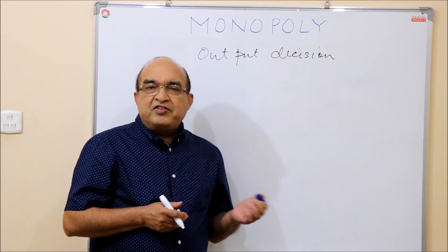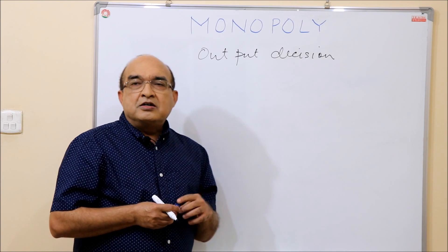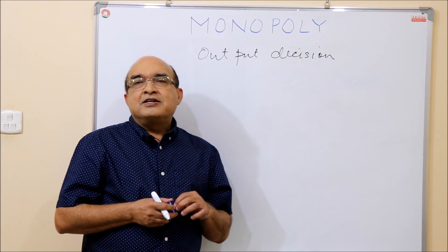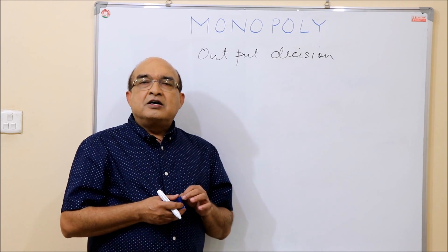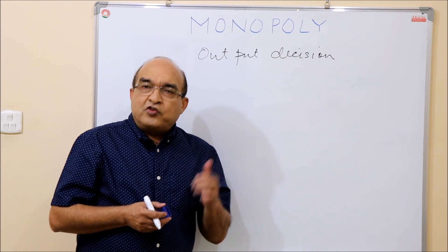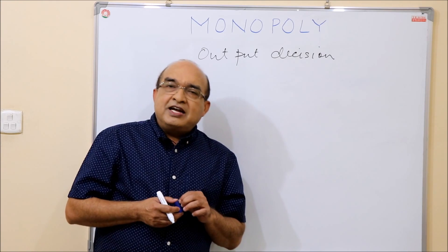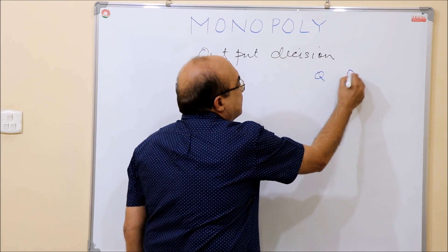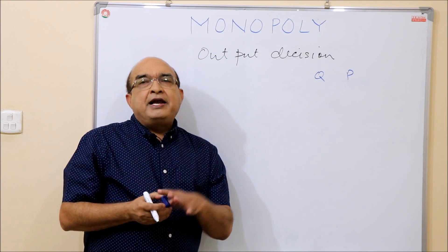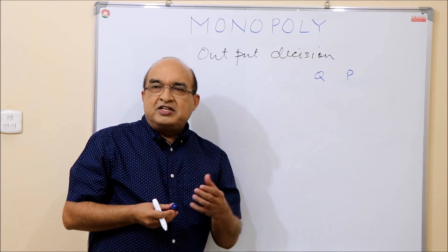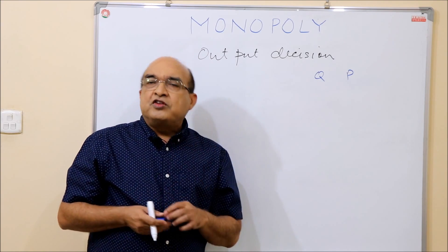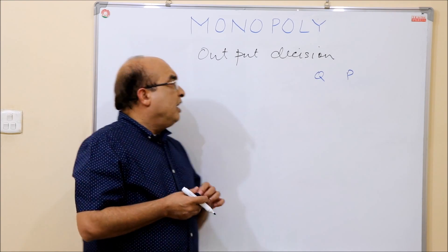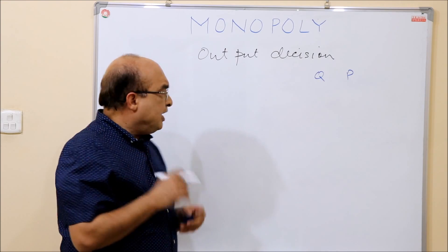In one of my previous videos in the series of lectures on monopoly, I explained the kind of market that monopoly is and the kind of demand curve the monopoly firm faces. From that it became obvious that a firm can choose one element of the two — either quantity or price. It can choose the quantity and the price will be determined by the demand curve, or if it chooses the price, it determines how much quantity it will be able to sell. It obviously cannot choose both at the same time.